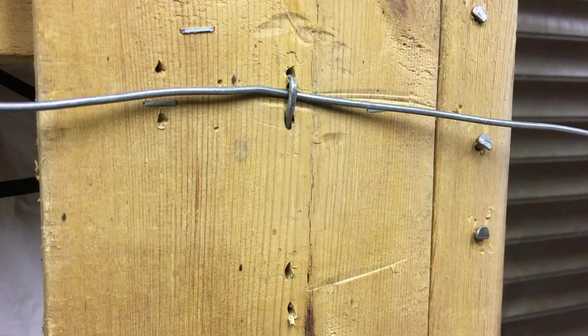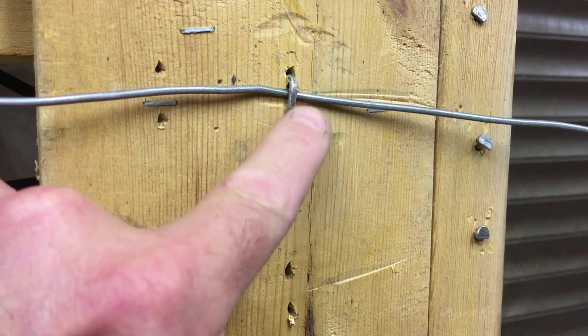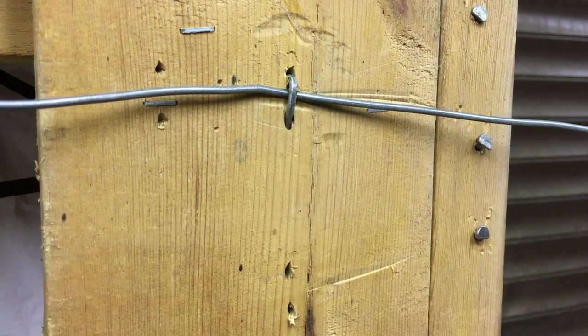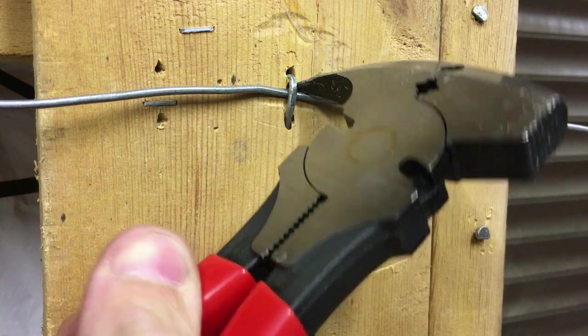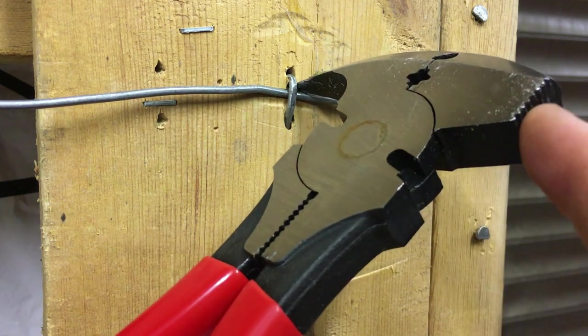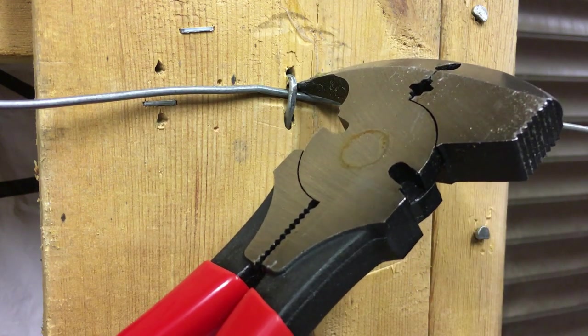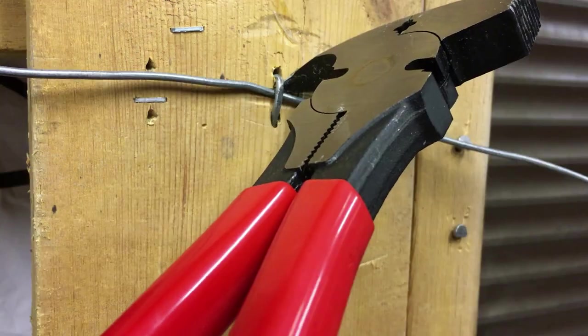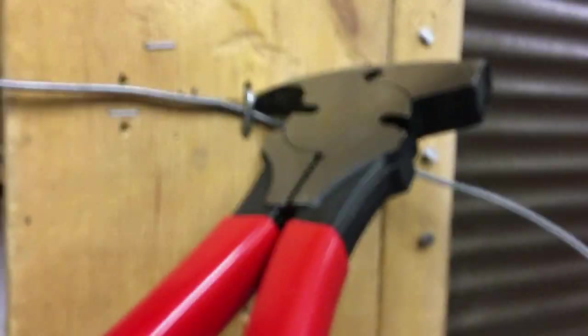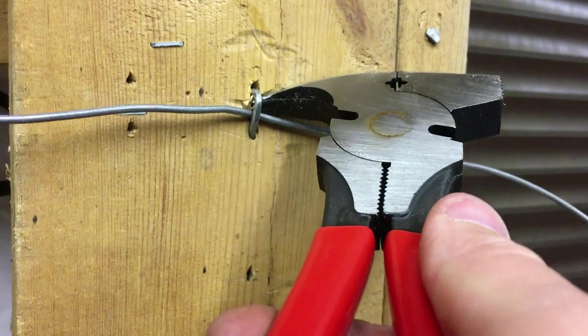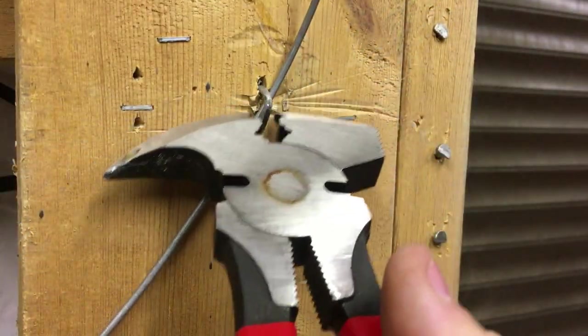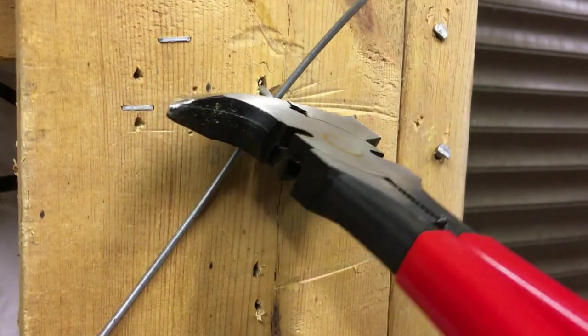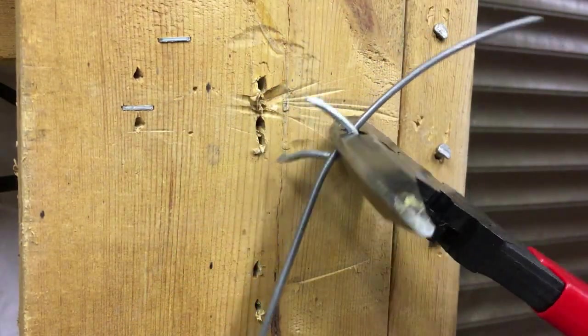Here's an example of a sunken in staple. It's really sunken in, so this is where you would use the point. Get the point just in behind. Use the end of the hammer section here. Give it a chop. And just lever the staple out with the hook. Then you can get the pincers in. Just pull the staple out.